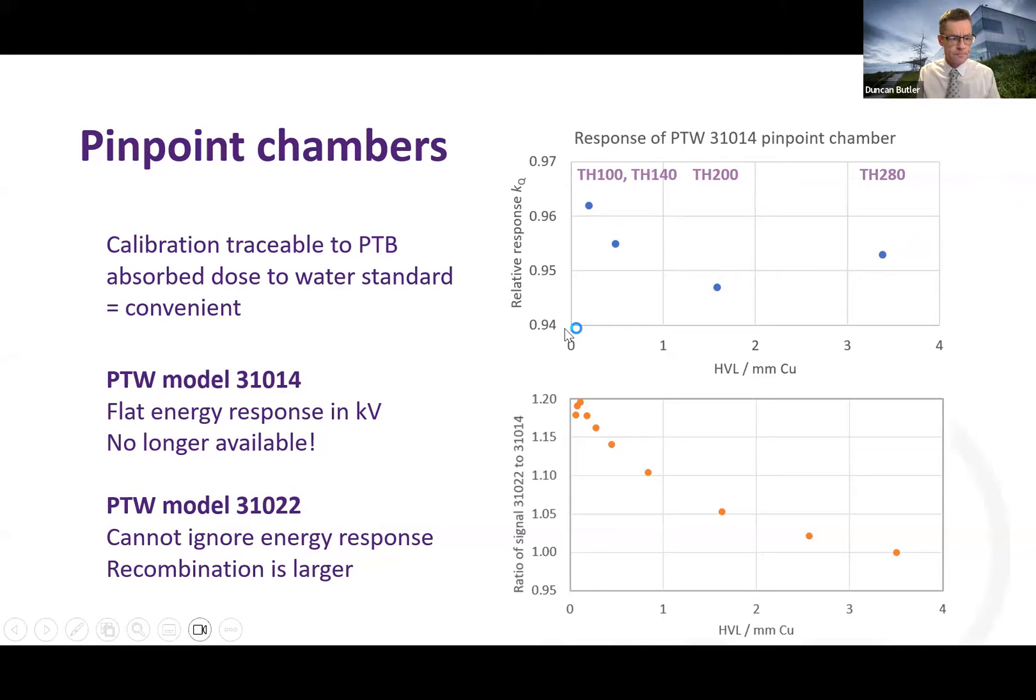Generally if you use four beams from 100 kV to 280 kV, and in this plot you can see that there is a bit of energy response, but it's within about 1% over the whole synchrotron range. So you can really use this chamber without much of a correction factor. That's the model 31014 pinpoint chamber. Unfortunately it's no longer available, and the replacement 31022 has a stronger energy response. And in the bottom graph I've plotted the ratio between those two chambers in air for conventional beams, and there is a 10% energy response for the 31022. So you can still use it but you have to be careful to correct the energy response. Also the recombination for this chamber is quite a bit larger.